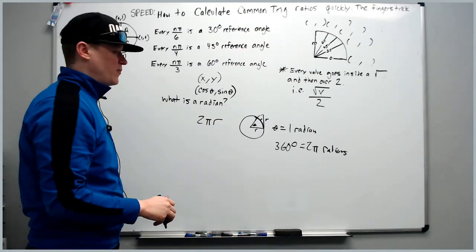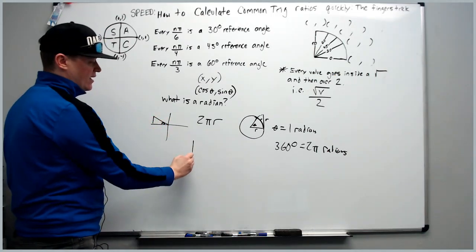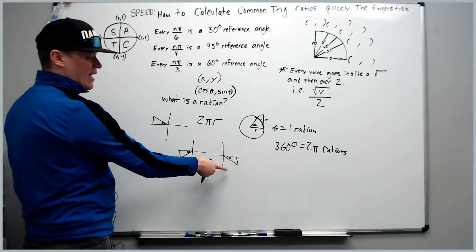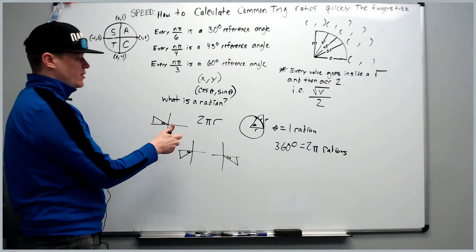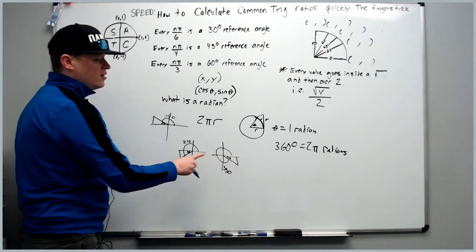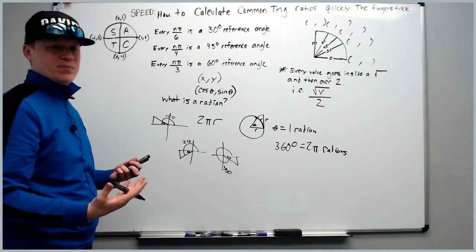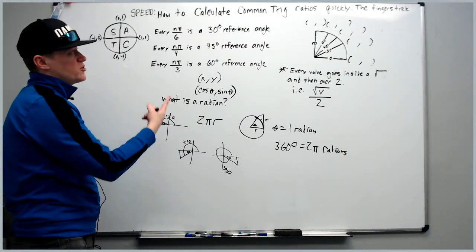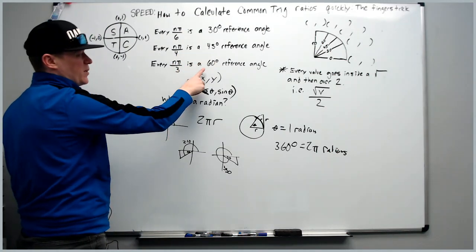The reference angle is simply the angle made with the x-axis. In the second quadrant it's the angle back to the x-axis, same for the third and fourth. The sine of 30°, 150°, 210°, and 330° all have the same numerical value — only the sign changes by quadrant. Every n pi over 6 gives a 30-degree reference angle, every n pi over 4 gives 45 degrees, and every n pi over 3 gives 60 degrees.